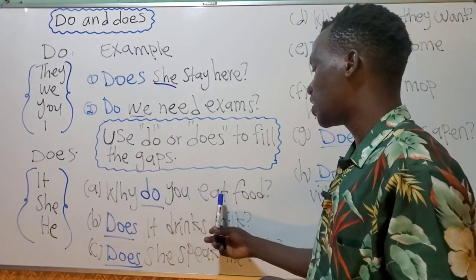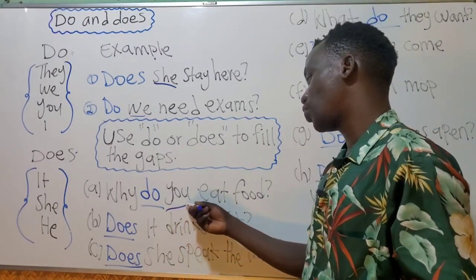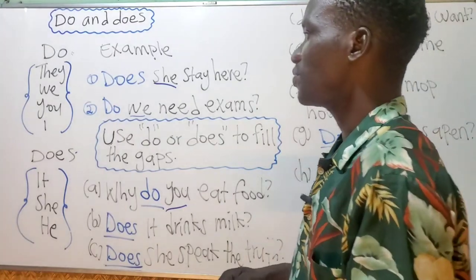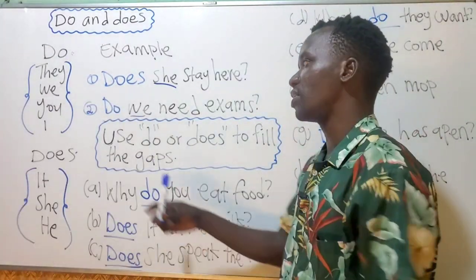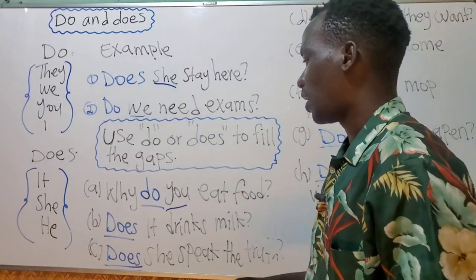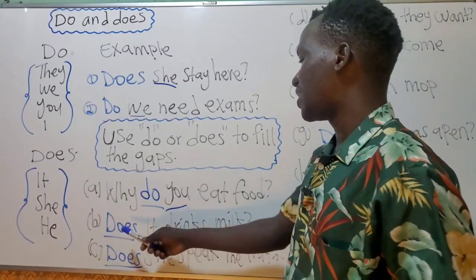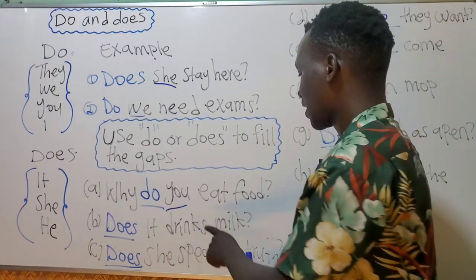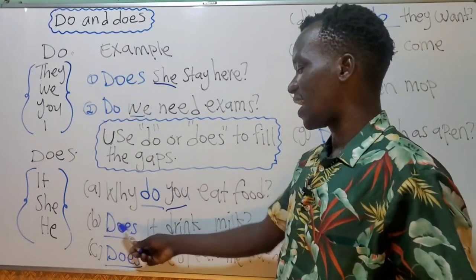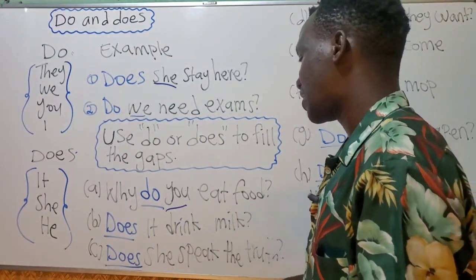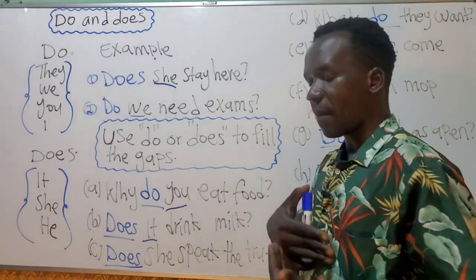Example: 'Why do you eat food?' — 'you' is second person, singular or plural, so you use 'do.' Another example: 'Does it drink milk?' — 'it' is singular; it can be a cow, a baby, or any animal.